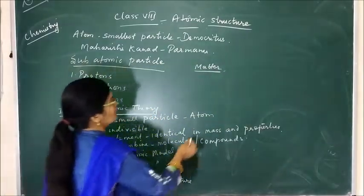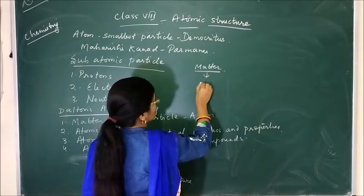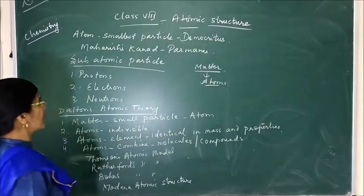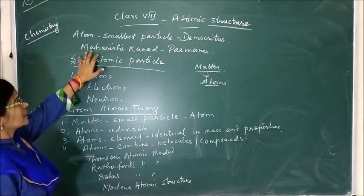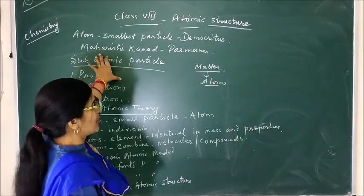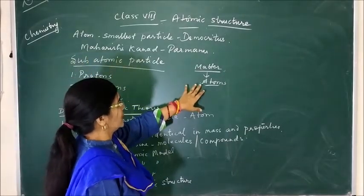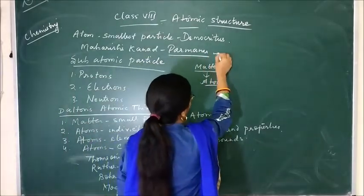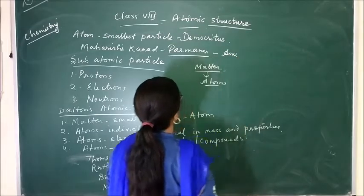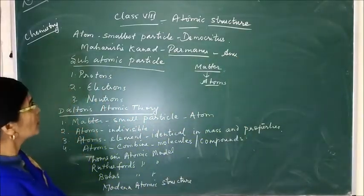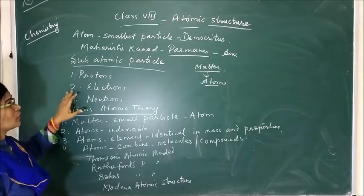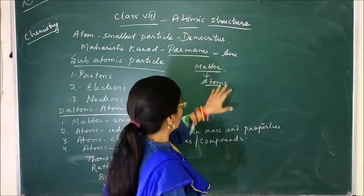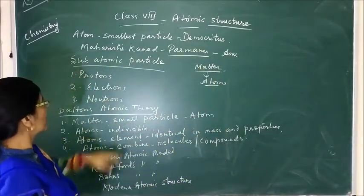All matter is made up of very small particles which are called atoms. Atom is the smallest particle of any matter. Maharshi Kannada, an Indian philosopher, described the atom as the smallest particle in the form of parmanu or anu. He also told that this parmanu or anu is still made up of smaller particles, which are called subatomic particles.